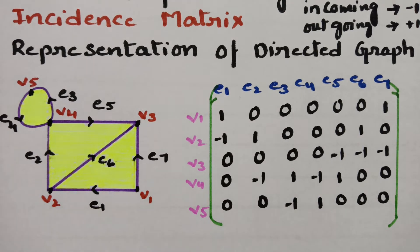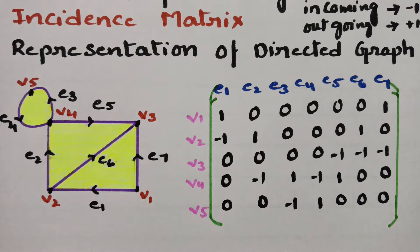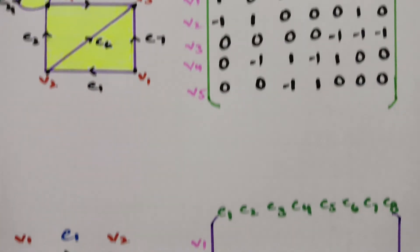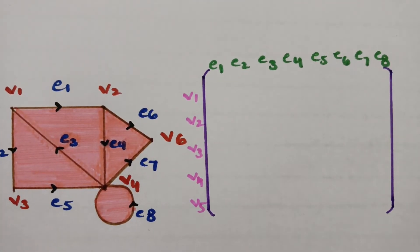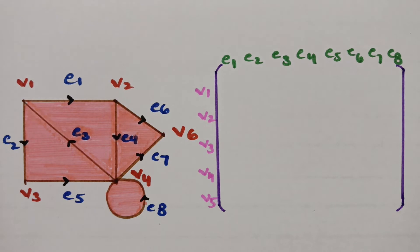This is how we represent the incidence matrix — very simple logic. For all outgoing edges give plus 1, for all incoming edges give minus 1, and if there is no connection with other edges represent it with 0. There is another example, so please follow and represent this incidence matrix.